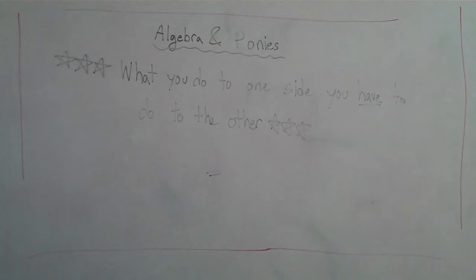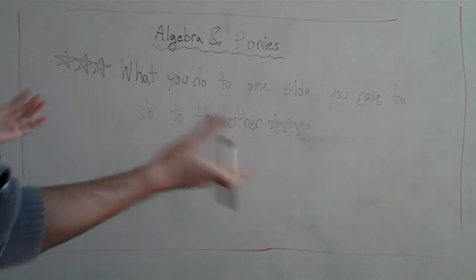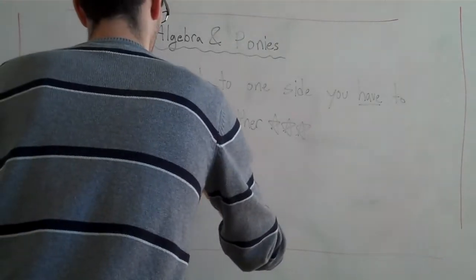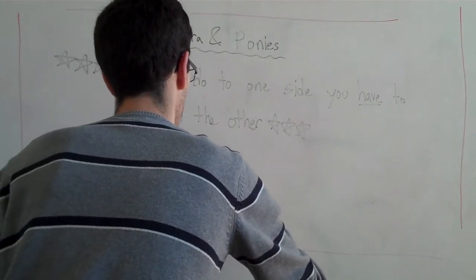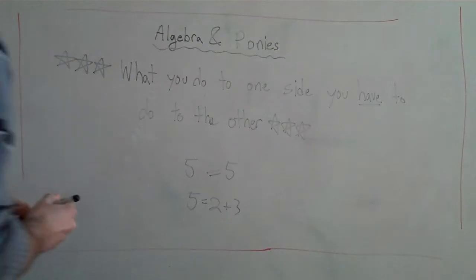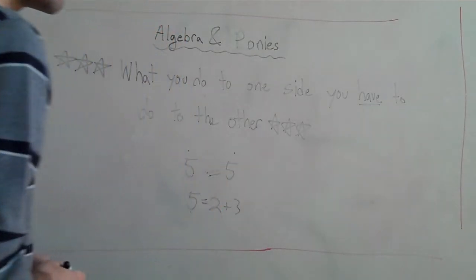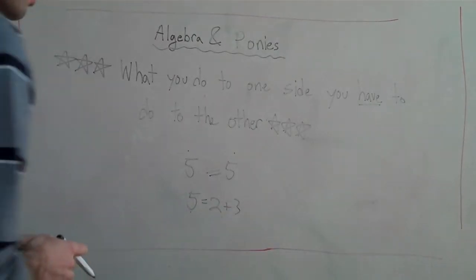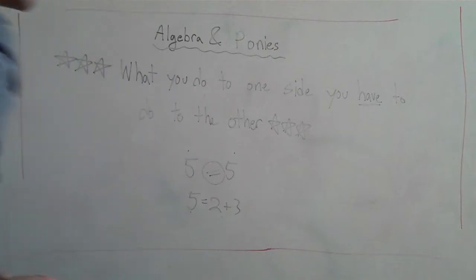It means equals. So like five equals five. Five also equals two plus three, right? We know they're the same — this is the same as this. Or one plus four. But we know they're the same because of the equal sign.